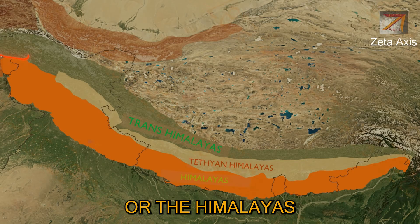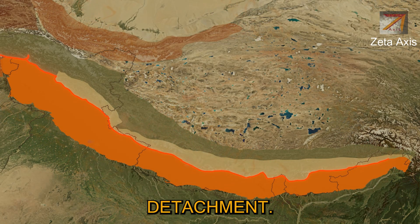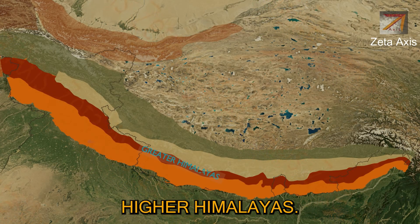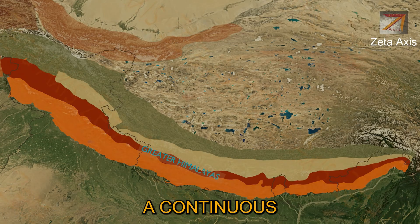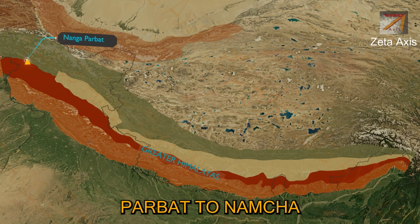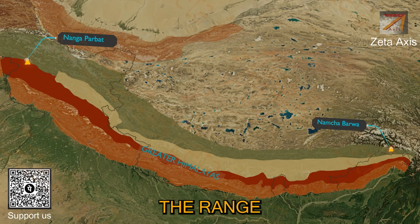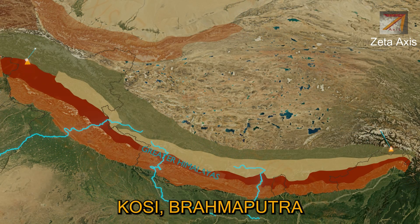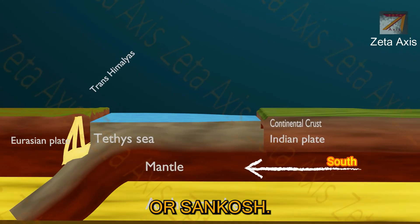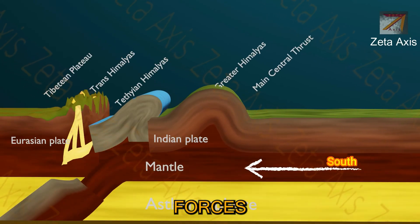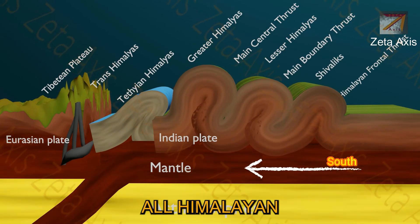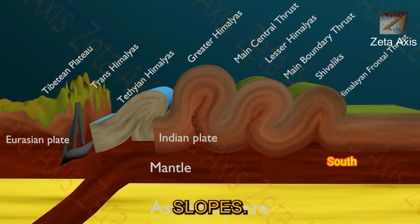The Himalayas are separated from Trans-Himalayas or Tethian Himalayas by the South Tibetan Detachment. The northernmost part of the Himalayas is called the Greater or Higher Himalayas, forming a continuous chain of mountains from Nanga Parbat to Namchabarwa. The range has very few gaps, mainly provided by antecedent rivers like Satlaj, Ghagra, Kosi, and Brahmaputra. Due to compressive forces acting from the southern side during upliftment, the southern slopes of all Himalayan mountains are steep compared to the northern slopes.